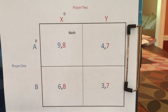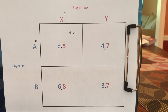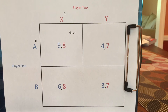A Nash Equilibrium is a no-regrets outcome. What that means is when you see how the other person moved, you don't regret your choice if you're in a Nash Equilibrium. And for it to be a Nash Equilibrium, no one will regret their choice.